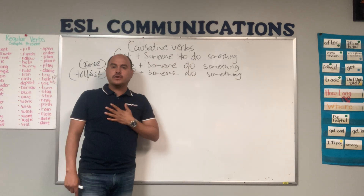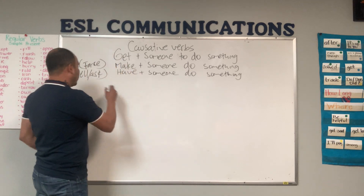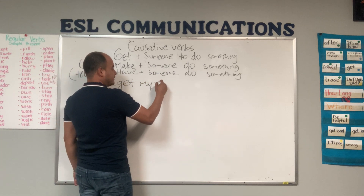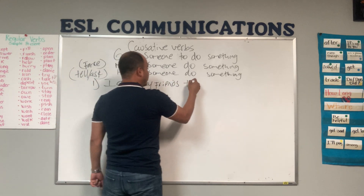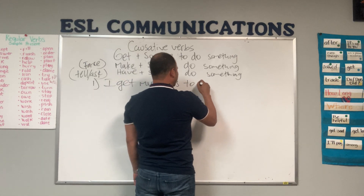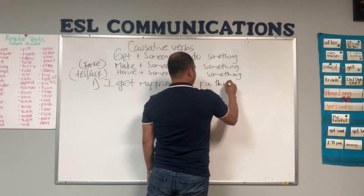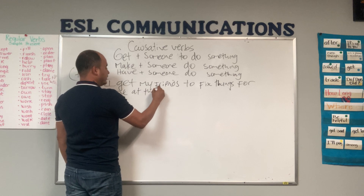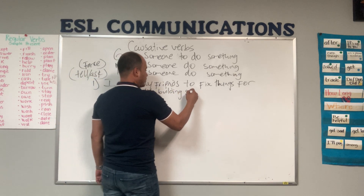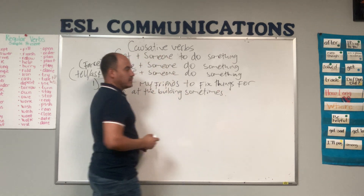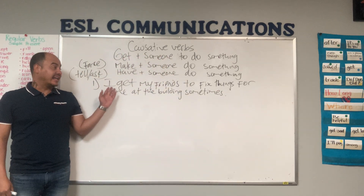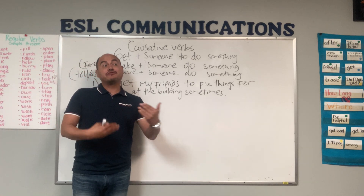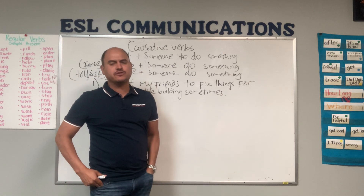Let's see the first one: get someone to do something. For example: I get my friends to fix things for me at the building sometimes. ¿Qué es lo que dice esto? Consigo — como los convenzo de hacer esto. I get my friends to fix things for me at the building sometimes.